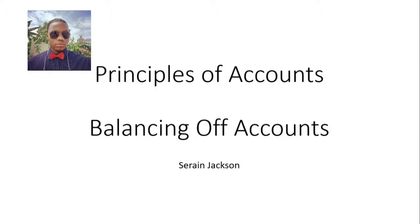Welcome to another episode of Everything Business. In this episode, I will be talking about balancing off double entry accounts. We know that the double entry system states that one transaction must be recorded twice — once on the debit side and once on the credit side. At the end of the accounting period, the accounts have to be tallied or balanced off, and that is what we're going to be learning about today.